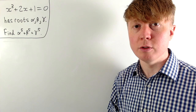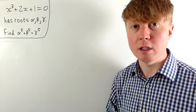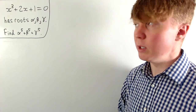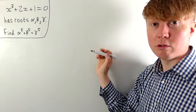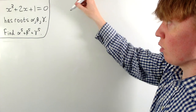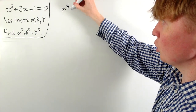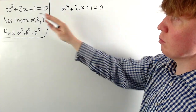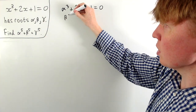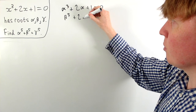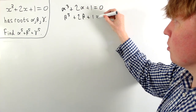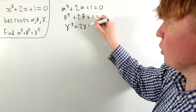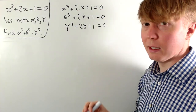Before we get to Vieta's formulas, we'll use the fact that alpha, beta, and gamma are all roots of this equation, which means substituting any of them in gives zero. So we write: alpha cubed plus two alpha plus one equals zero, beta cubed plus two beta plus one equals zero, and gamma cubed plus two gamma plus one equals zero.